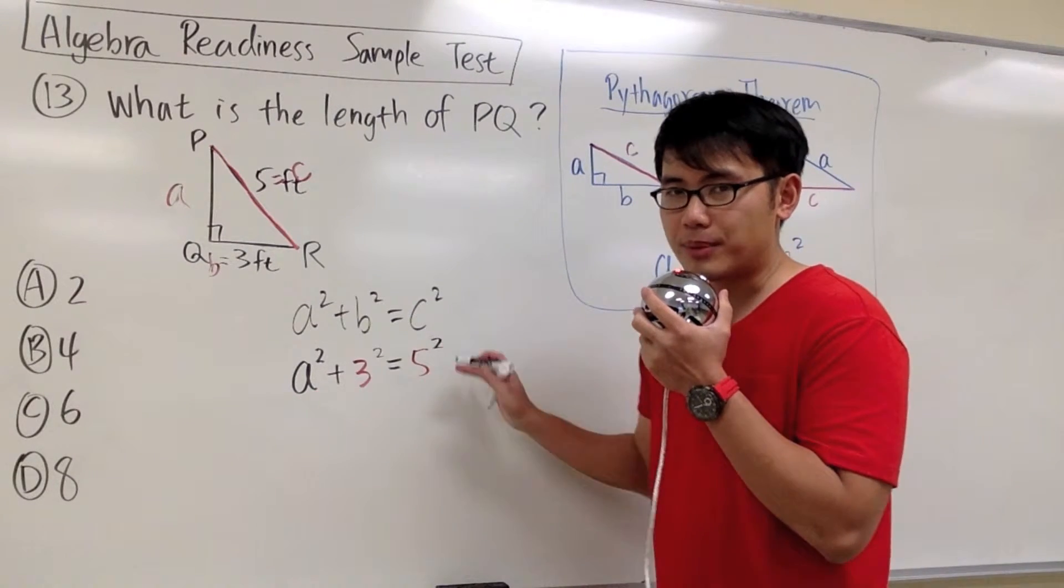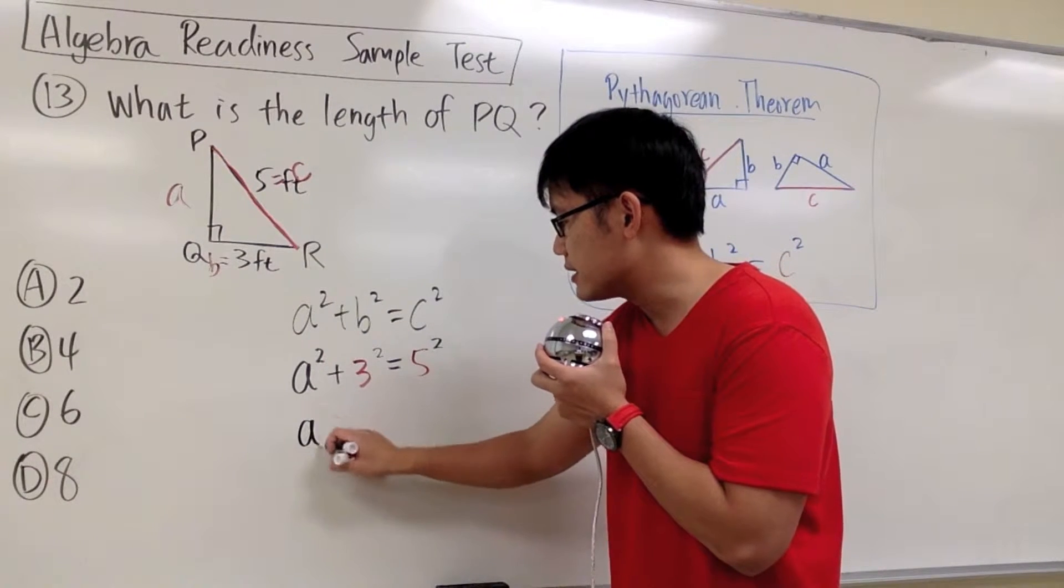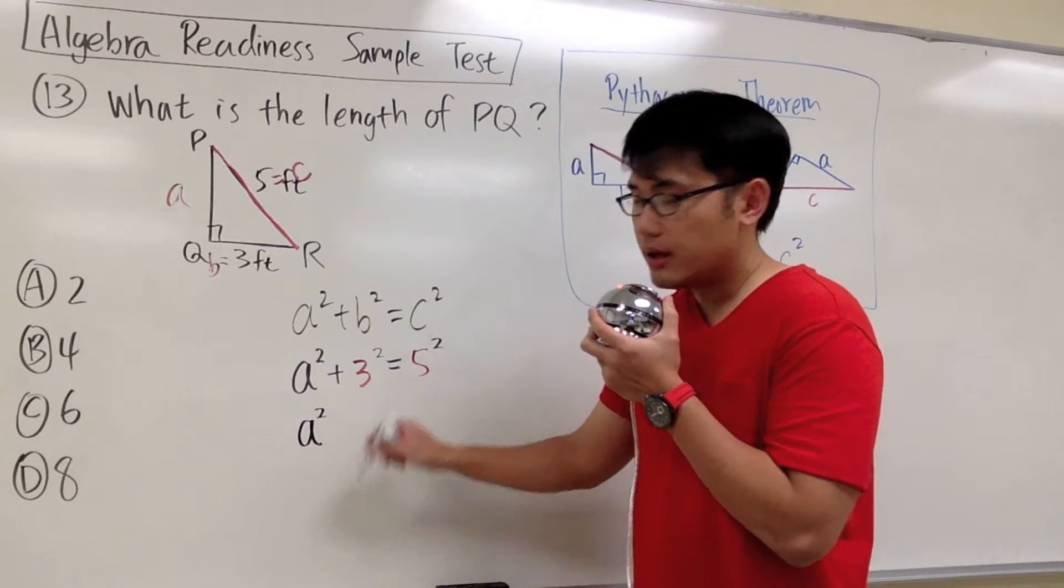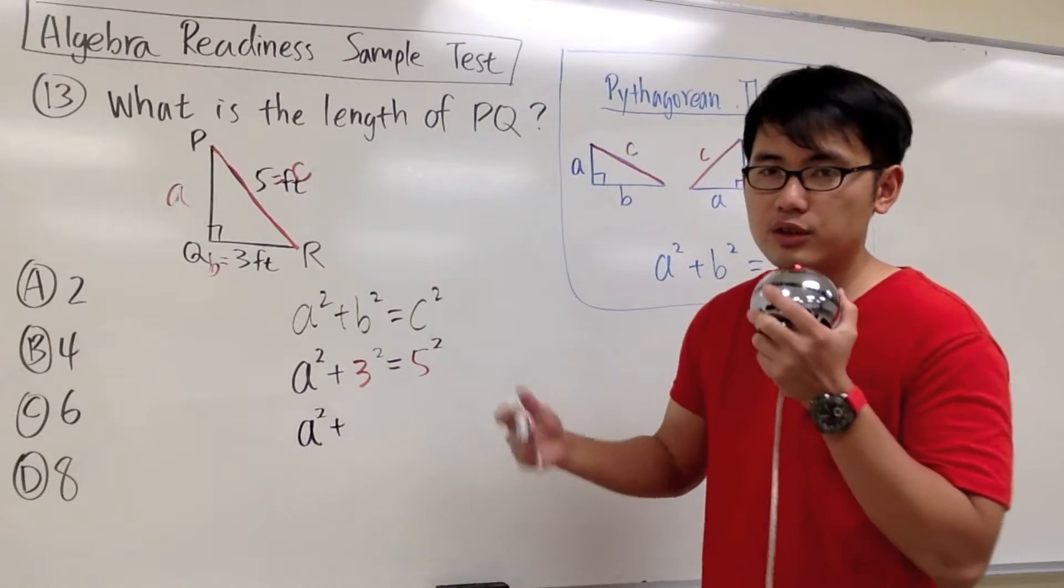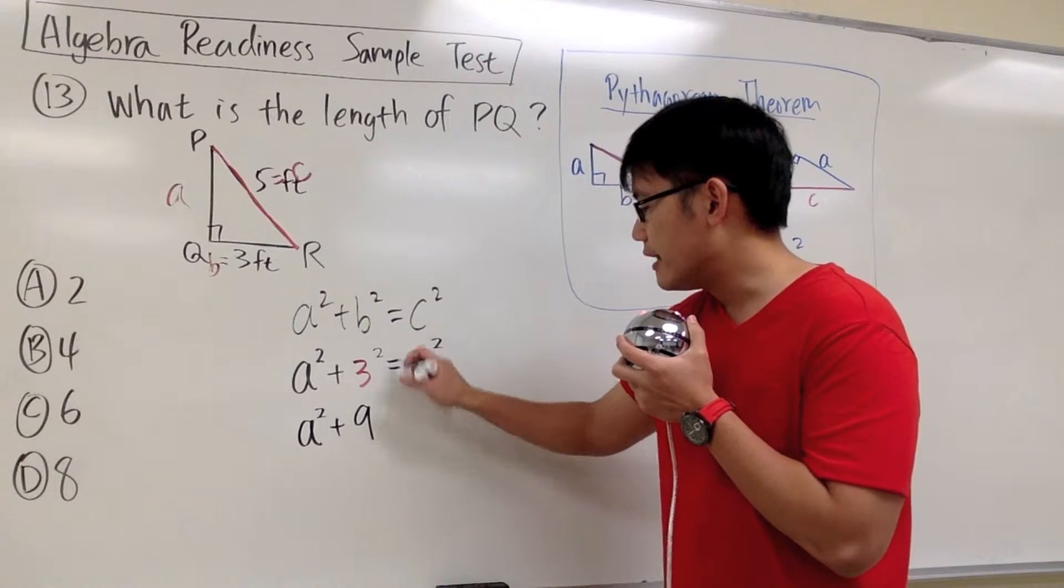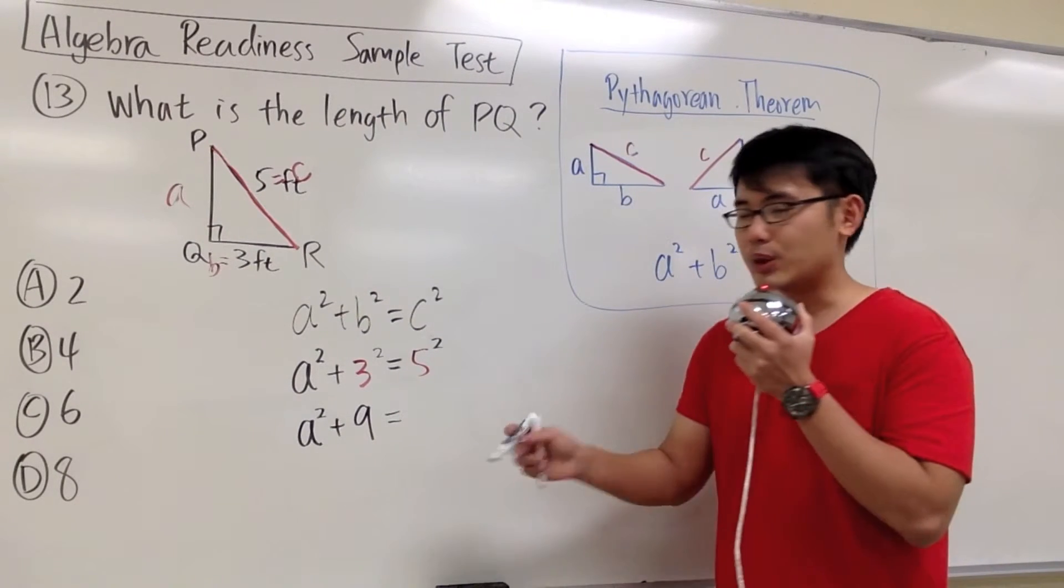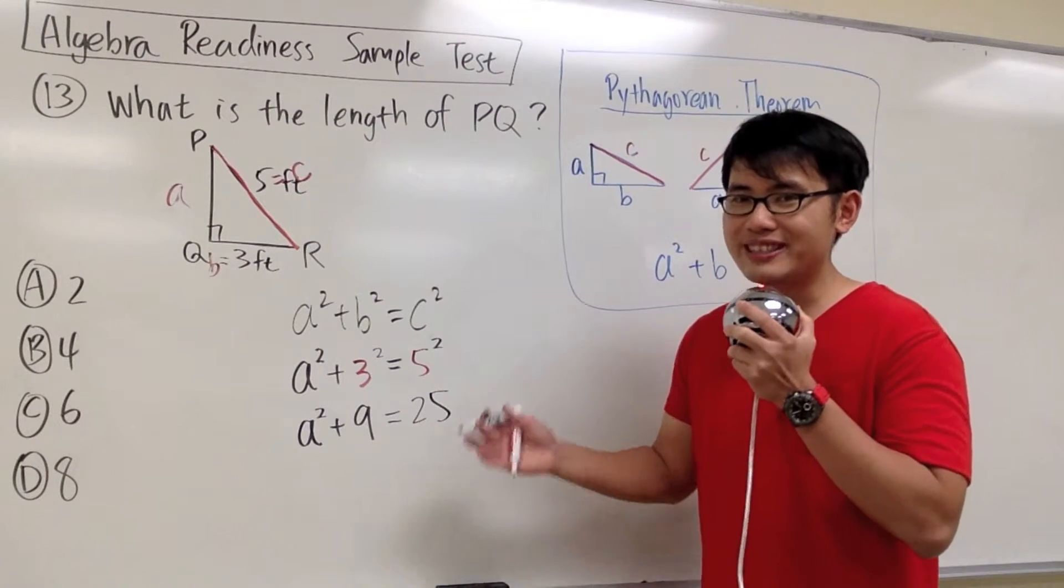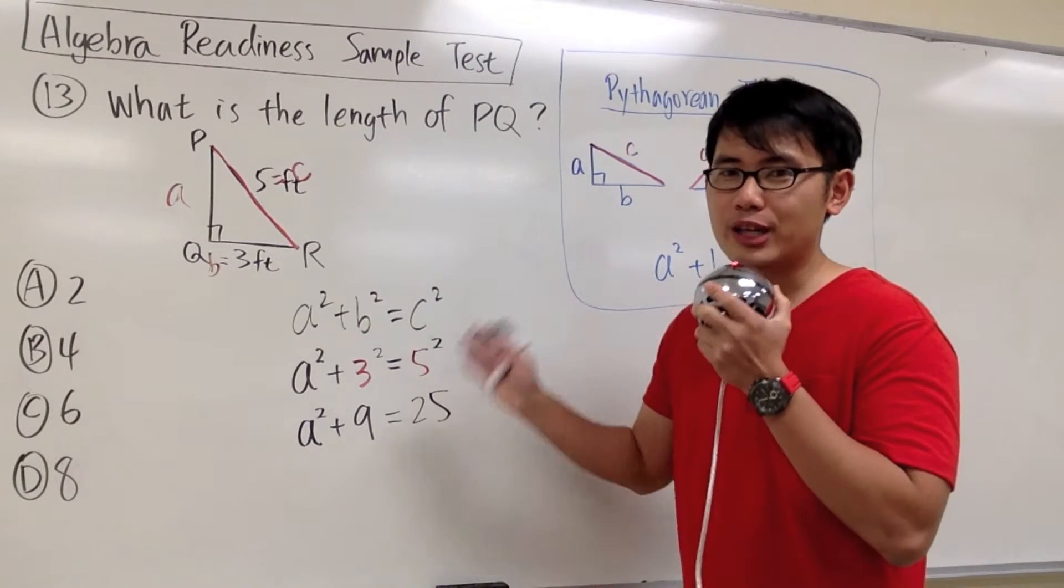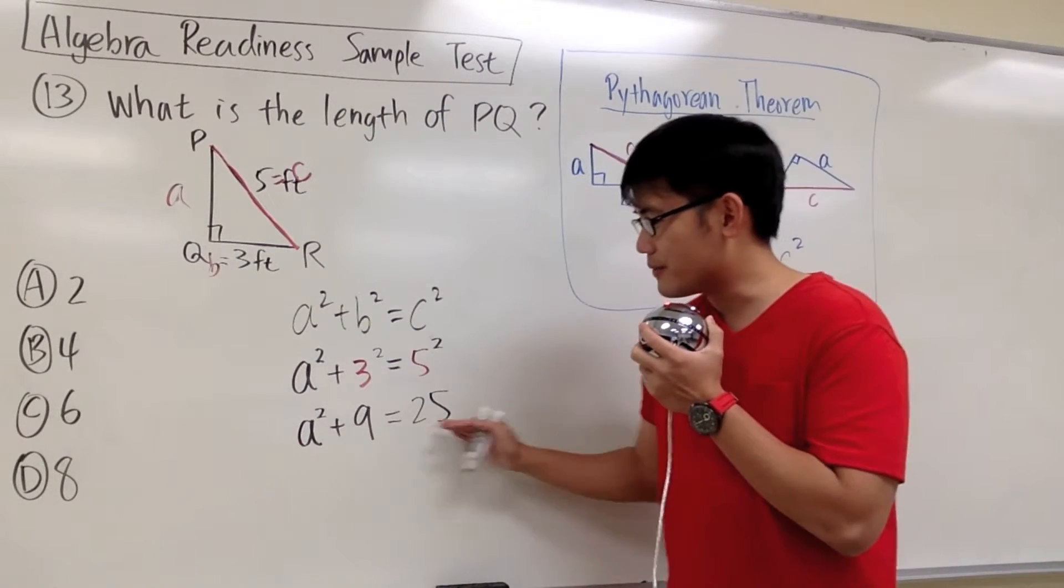Then we work out the powers. We keep the A squared because we don't know what it is yet. We have A squared, and then we add 3 squared, that's 3 times 3, so we have 9. That will be equal to 5 squared, 5 times 5, that will give us 25. At the moment, notice that this is actually a typical algebra question, because what we're doing here is solving a quadratic equation.